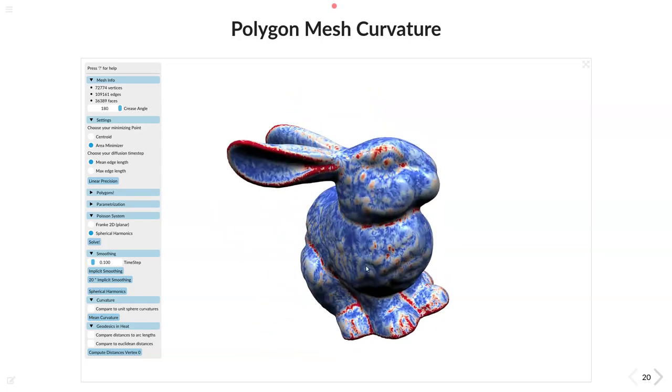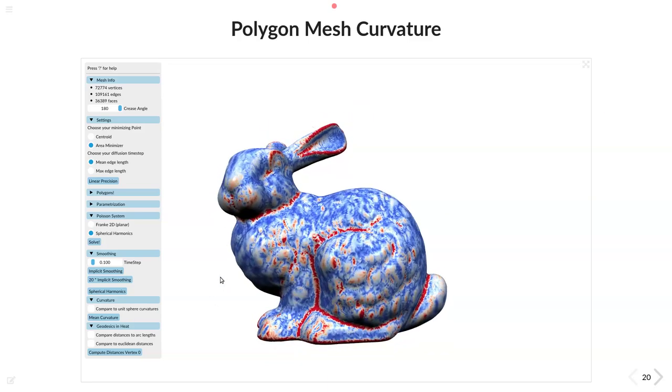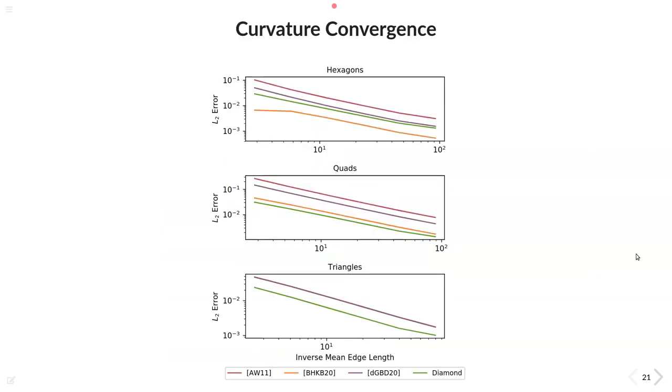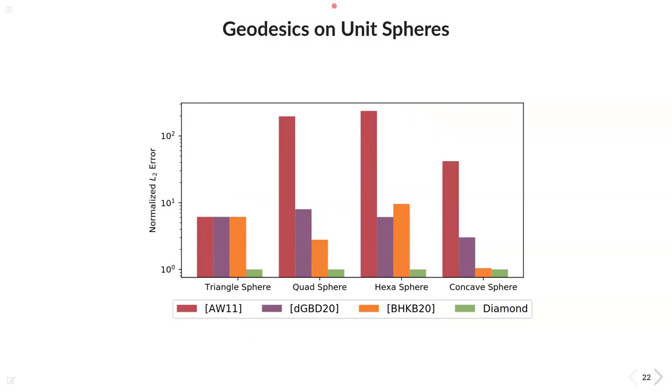Or alternatively I can use a mesh here with now a different tessellation and for example compute its mean curvature which also gives really nice results with the help of our diamond Laplacian. For qualitative results aside let's look at the quantitative results because here we are also really strong. As for example here we evaluated the convergence behavior of the mean curvature on different tessellated unit spheres and our operator depicted in green obtains really strong results. The other lines show the other polygon operators I introduced earlier.